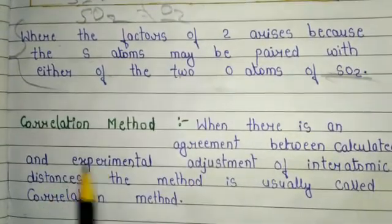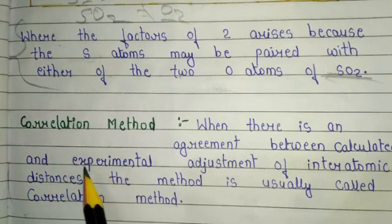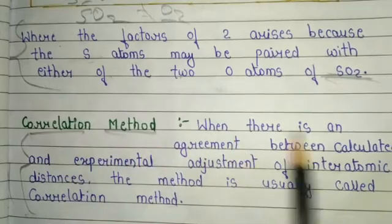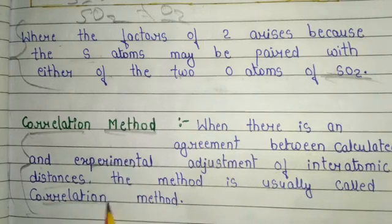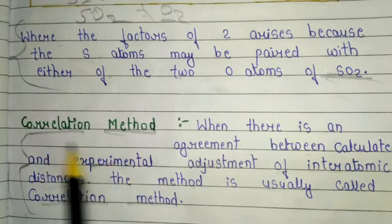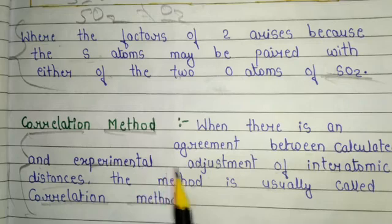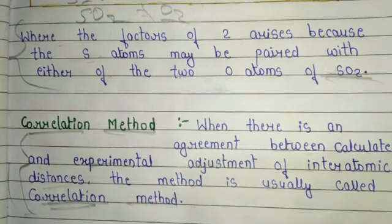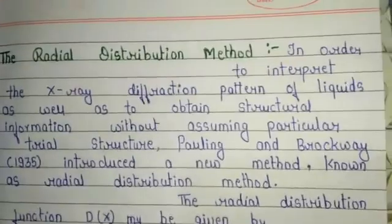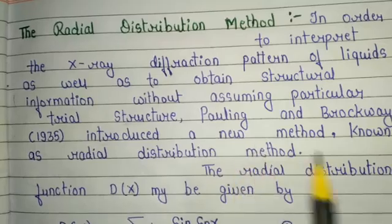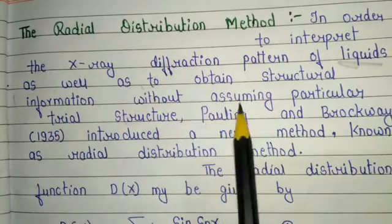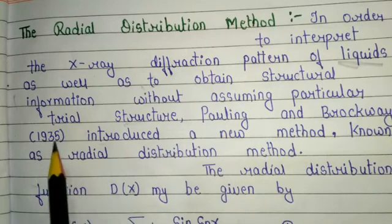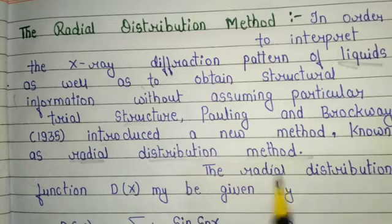Two important methods are associated with the Virial equation. The first is the correlation method: when there is an agreement between the calculated and experimental adjustment of interatomic distance, the method is usually called the correlation method. The second important method is the radial distribution method, introduced by Pauling and Brockway in 1935, in order to interpret the X-ray diffraction pattern of liquids and obtain structural information without assuming a particular trial structure.